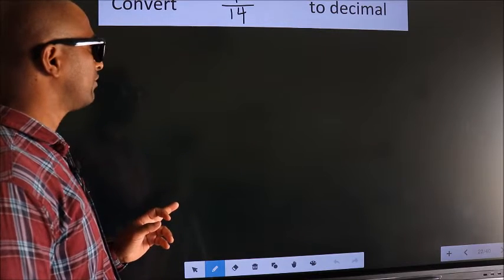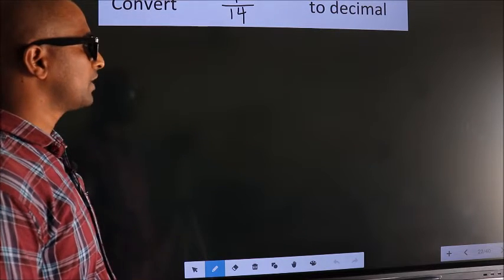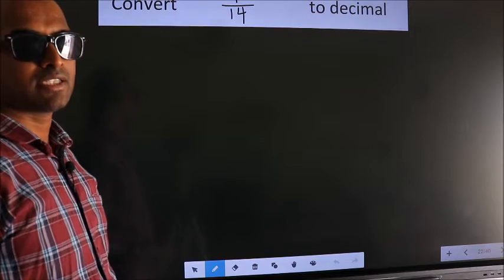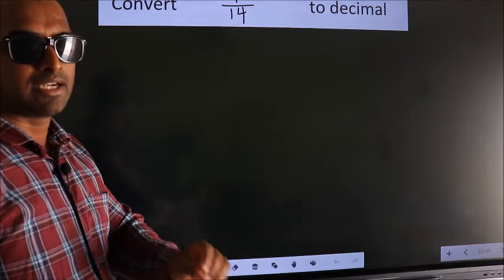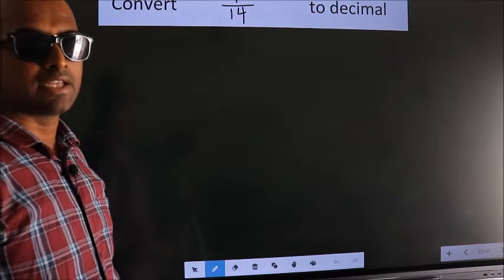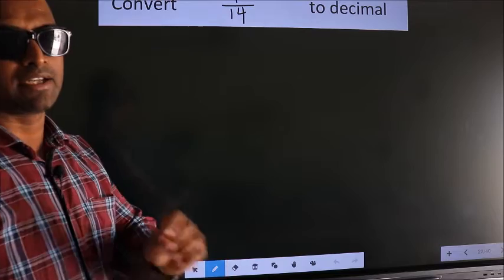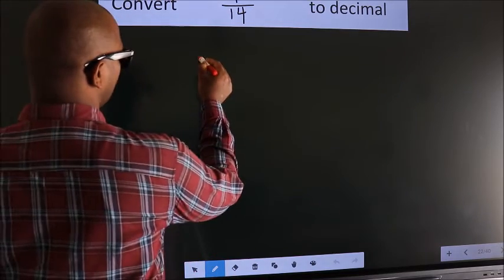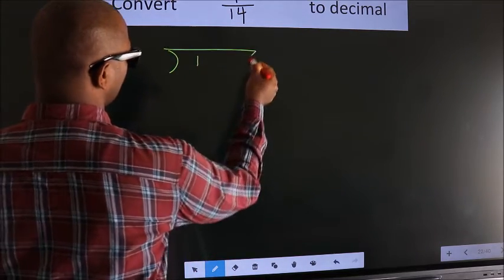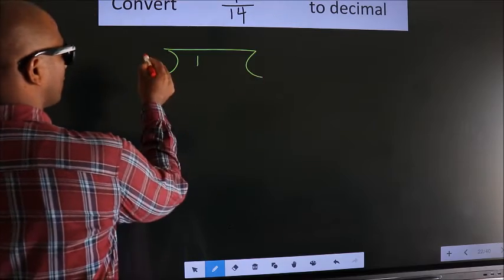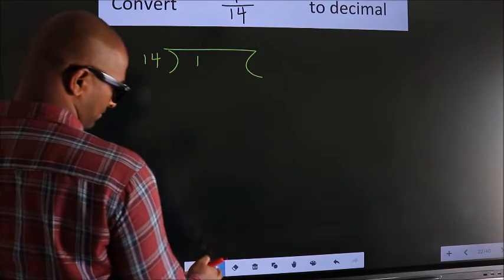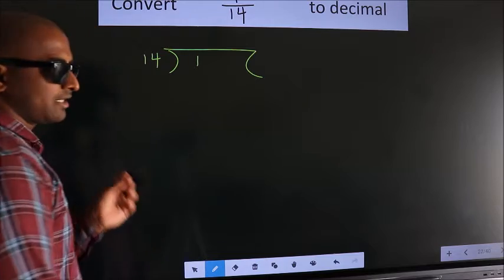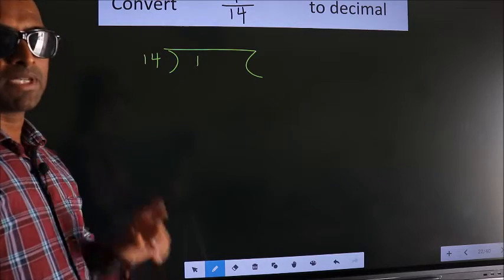Convert 1 by 14 to decimal. To convert this to decimal we have to divide, and to divide we should frame it in this way: 1 here, 14 here. This is your step 1.